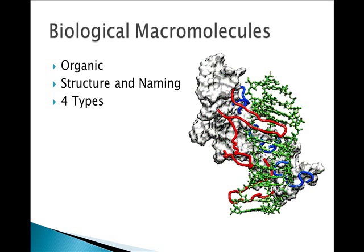The single unit is called a monomer, and the multiple units are called polymers. There are four types of biological macromolecules we'll talk about: carbohydrates, lipids, proteins, and nucleic acids.